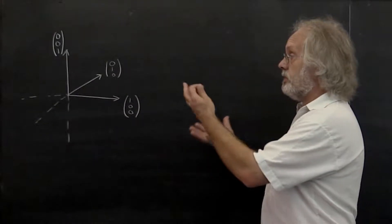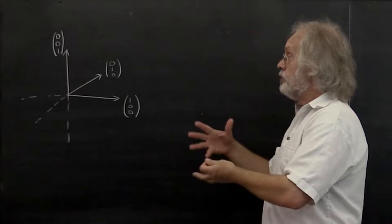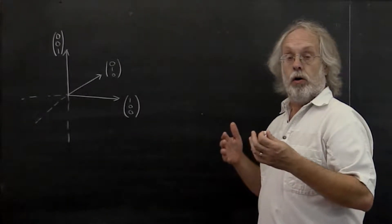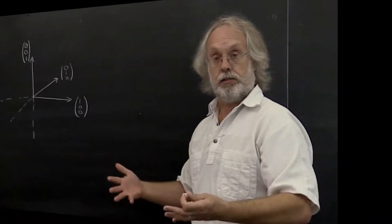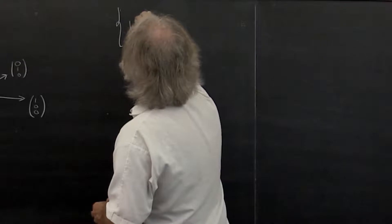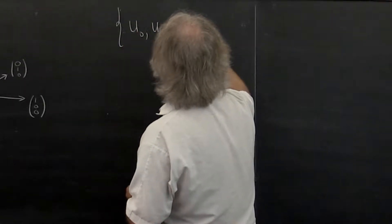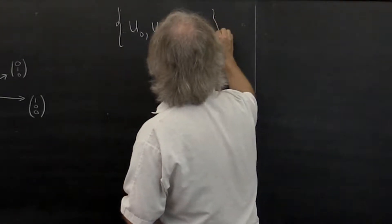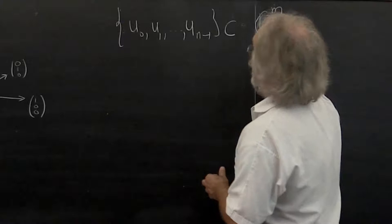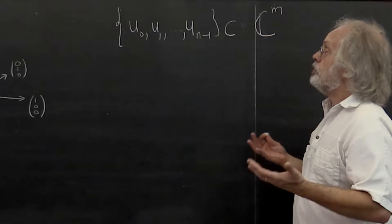Now a set of vectors that has this property, that they are of unit length and they are mutually orthogonal, are known as mutually orthonormal vectors. So a set of vectors u0, u1 through u n-1, there's n of them, which is a set in Cn, is said to be mutually orthonormal.